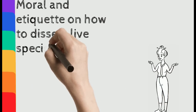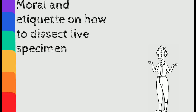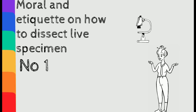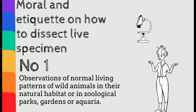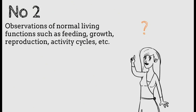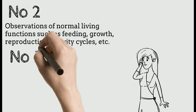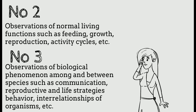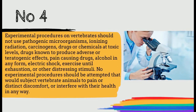Moving on to the moral and etiquette guidelines on how to dissect live specimens. Some guidelines must be followed when live animals are used in the classroom. Multiple animals can be used as experimental organisms in the following situations: observation of normal living patterns of wild animals in their natural habitat or in true biological settings; observation of normal living functions such as feeding, growth, reproduction, and activity cycles; and observation of biological phenomena among and between species, such as communication, reproductive and life strategy behavior, or the relationships of organisms.